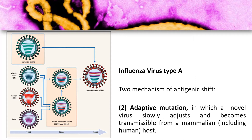The second mechanism of antigenic shift is adaptive mutation, in which a novel virus slowly adjusts and becomes transmissible from a mammalian host, including humans. Environmental external factors force the virus to mutate in order to adapt to the environment and enter human hosts.